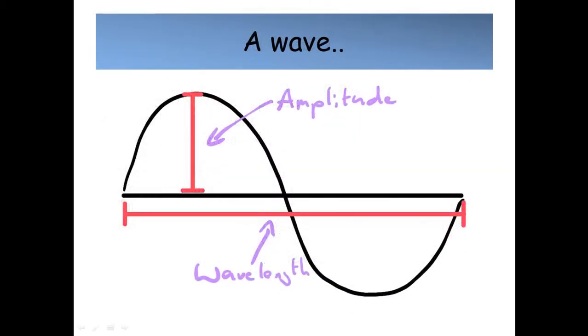So here we've got a picture of a wave and you can see the amplitude. That's from the wave's rest position to the maximum displacement or the peak. And the wavelength, here you can see one whole wave, but it could be from peak to peak or from trough to trough.